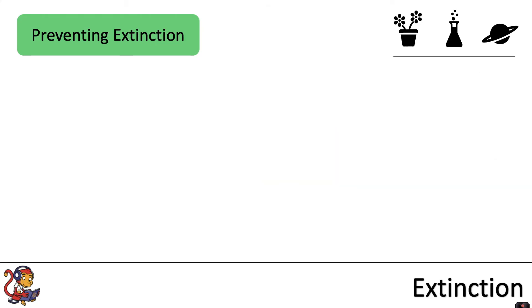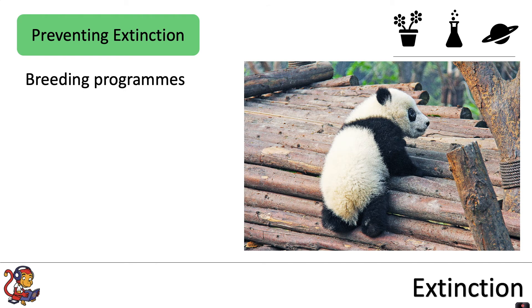Some ways that we can prevent extinction include breeding programs. For example, we've got a panda here — there are lots of panda breeding programs across the world, and zoos play a major part in developing breeding programs and release schemes to try and increase the numbers of particular organisms in the wild.